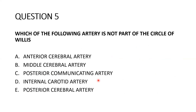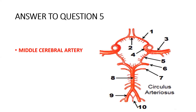Question five: which of the following arteries is NOT part of the Circle of Willis? Options are: A) anterior cerebral artery, B) middle cerebral artery, C) posterior communicating artery, D) internal carotid artery, and E) posterior cerebral artery.